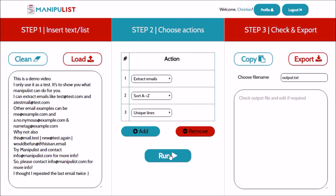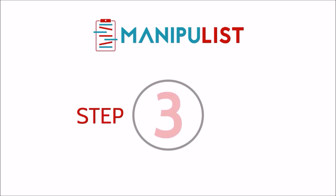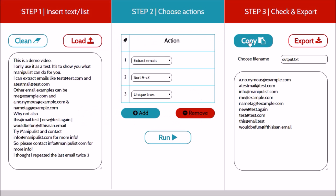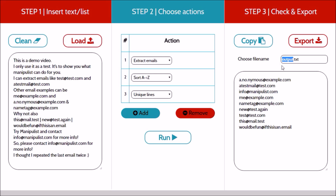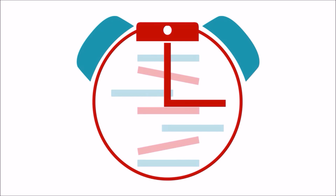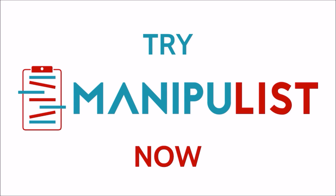Step three: check the output, copy it to clipboard, or choose a name and export it to file. What are you waiting for? Try Manipulist now.